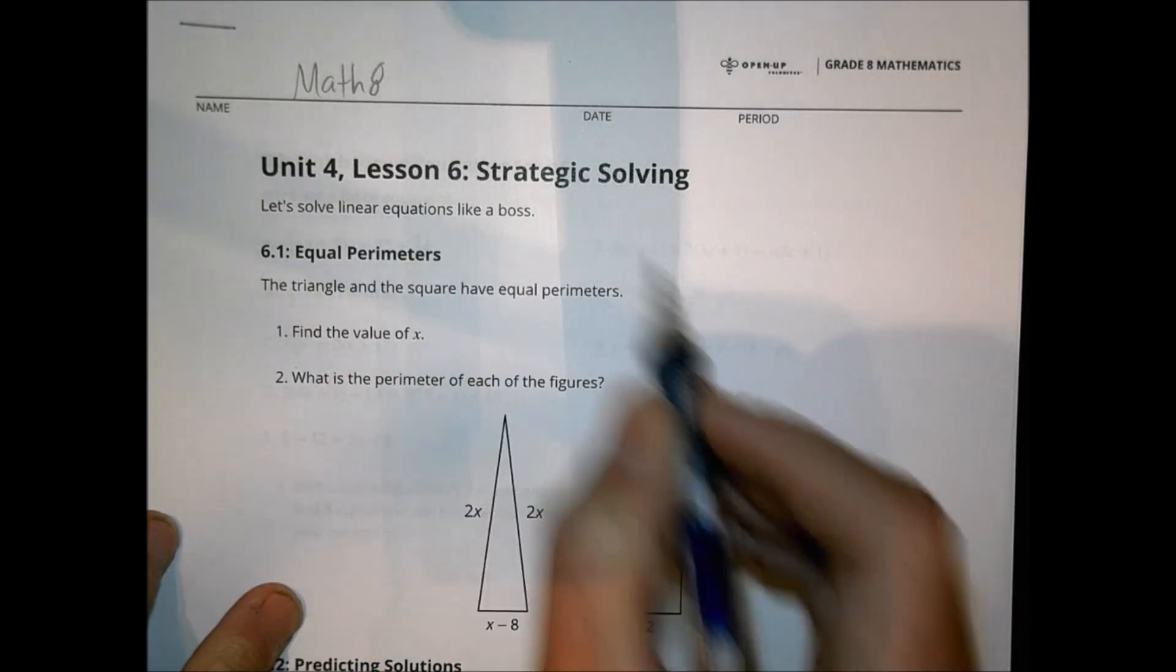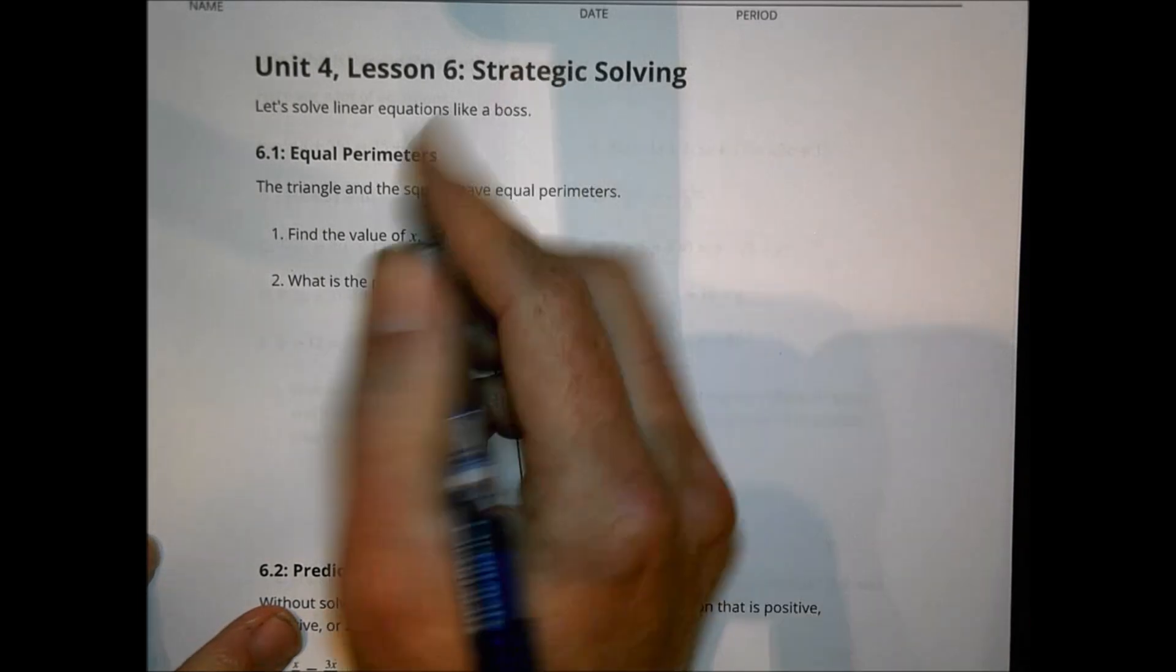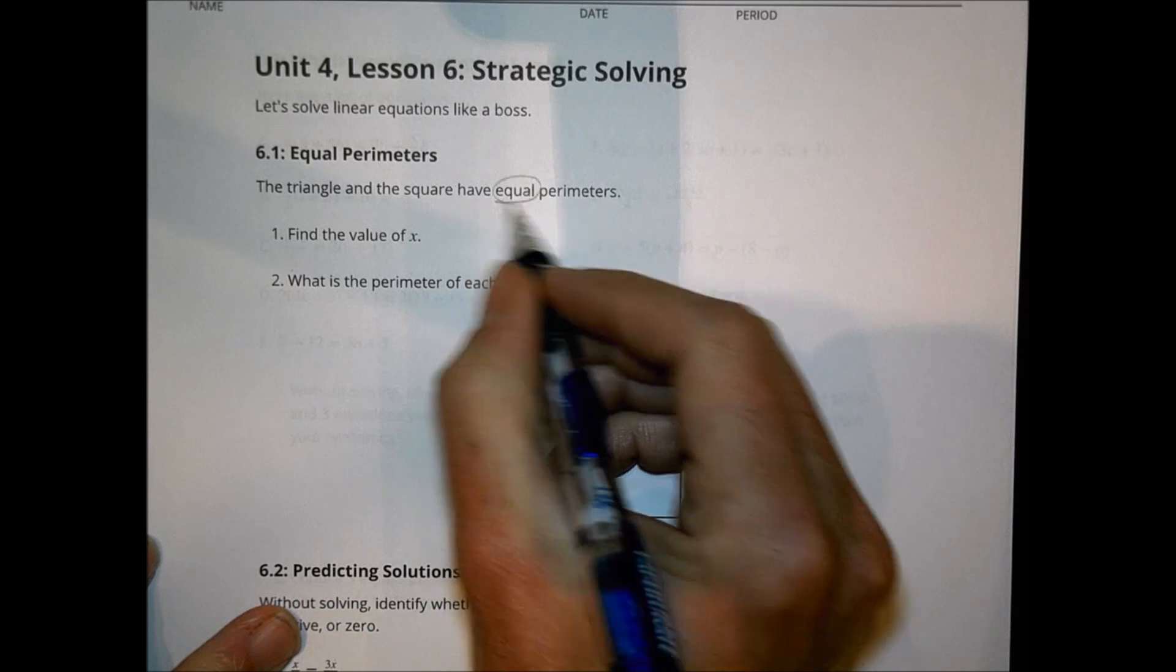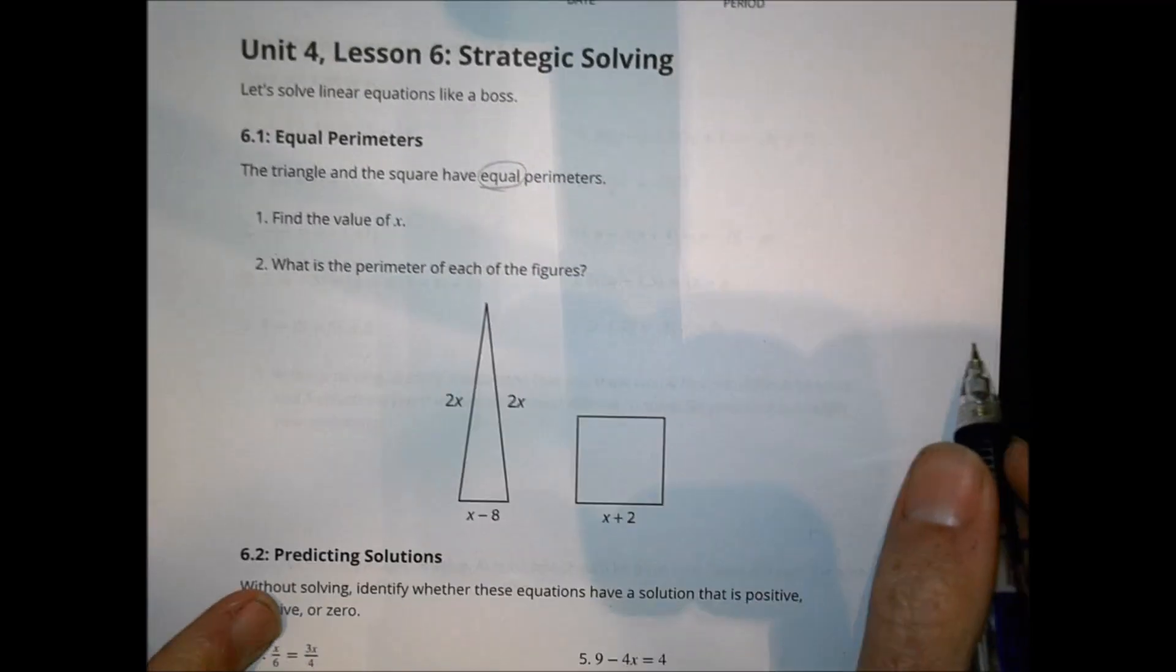We're going to be solving linear equations today, so let's take a look at the first activity in class today, called Equal Perimeters. It says the triangle and the square have equal perimeters. Find the value of x, and then find the perimeter of each of the figures.